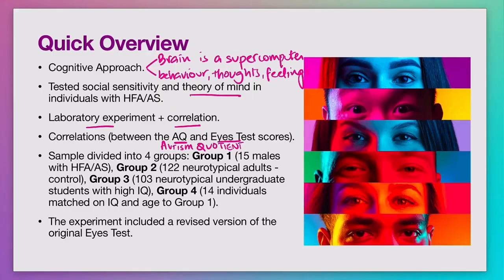Over 200 people participated in this experiment and they were divided into numbered groups. These numbers are important for you to remember because each number is used repeatedly as we move through different lessons, and you will need to remember this for your exam. Group one comprised of people who had autism with established diagnoses of high functioning autism or Asperger's syndrome.